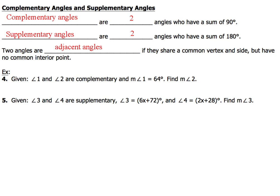Now, two angles are adjacent angles if they share a common vertex and side but have no common interior point. Let's take a look at examples 4 and 5. First, example 4.